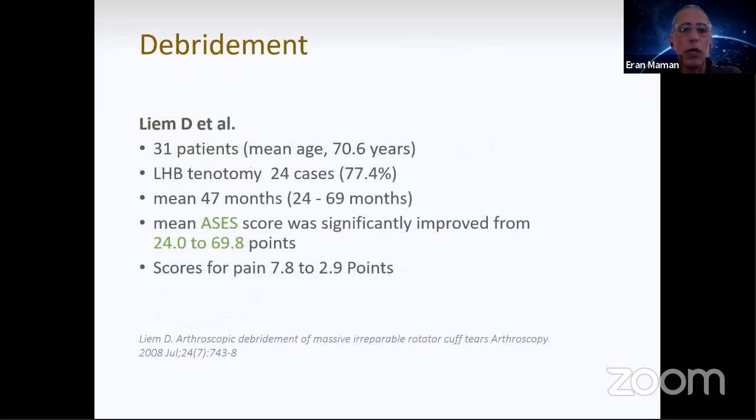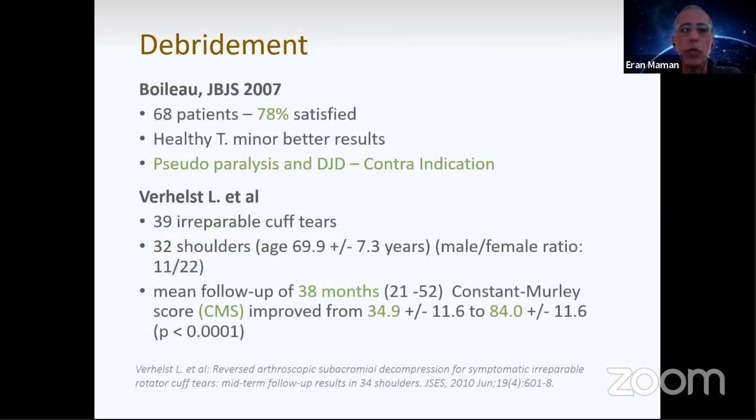Let's start with debridement. This study of 31 patients showed the ASES score improved from 24 to 69, which is remarkable. Another study by Boileau, 78% satisfaction rate. Another study, 39 irreparable cuff tears with follow-up of 38 months, constant score improved from 34 or 35 to 84, which is remarkable. Remember the number 34, which is usually the number for irreparable cuff tears.